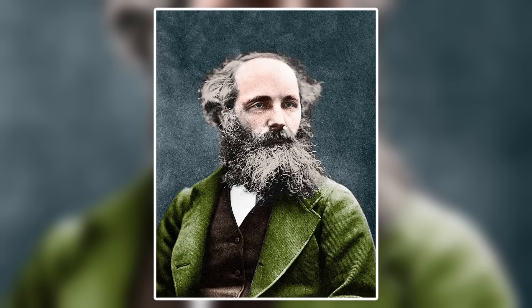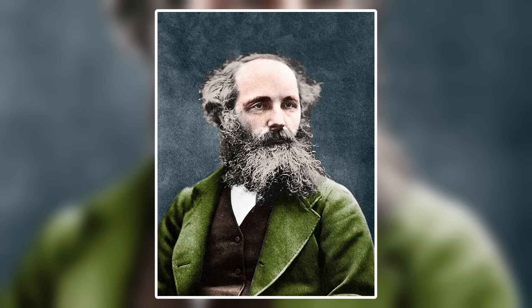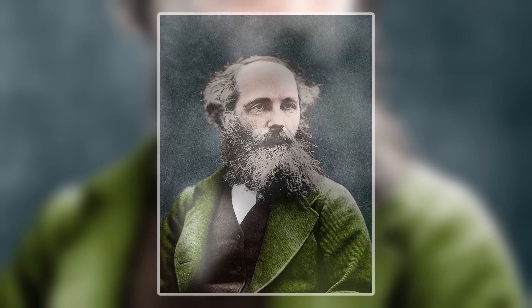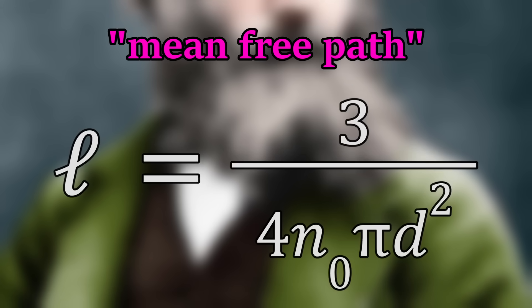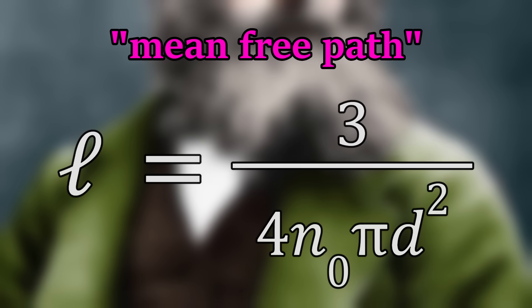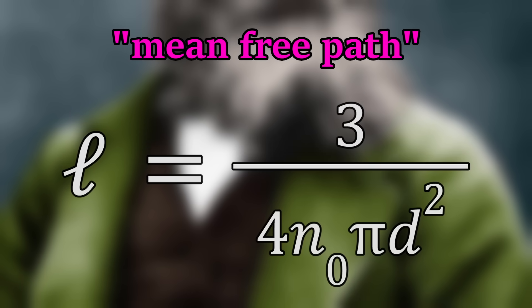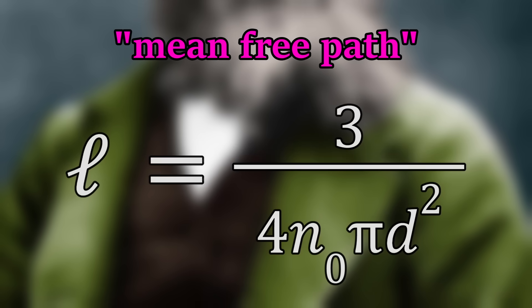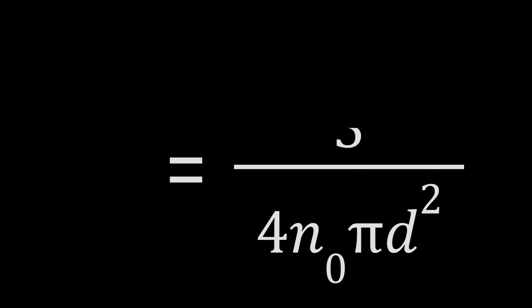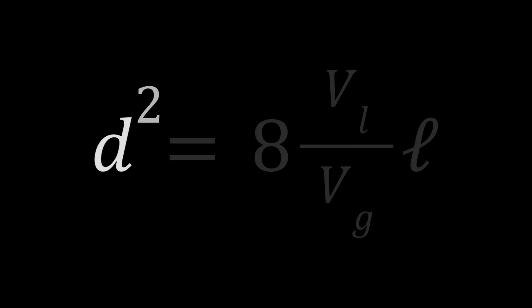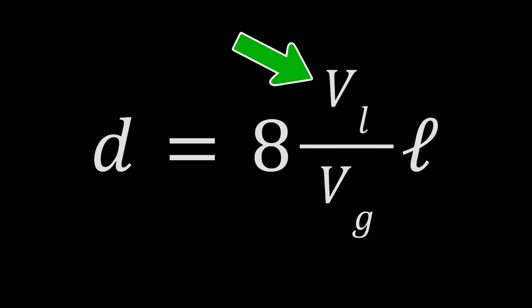He did this by starting with an equation of his colleague James Clerk Maxwell, that defines what he called the mean free path, or in other words, the average distance between two atoms or molecules. He manipulated this equation to represent the diameter of molecules, d, in terms of what he called a condensation coefficient, or the ratio of the volume of one mole of a substance as a liquid to the volume of one mole of the same substance as a gas.